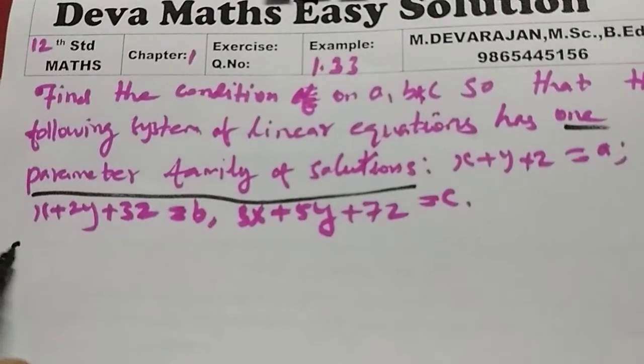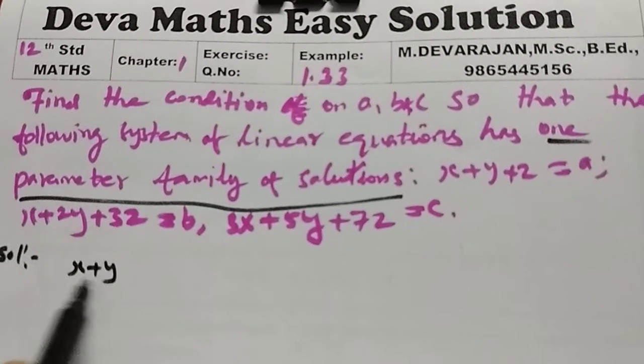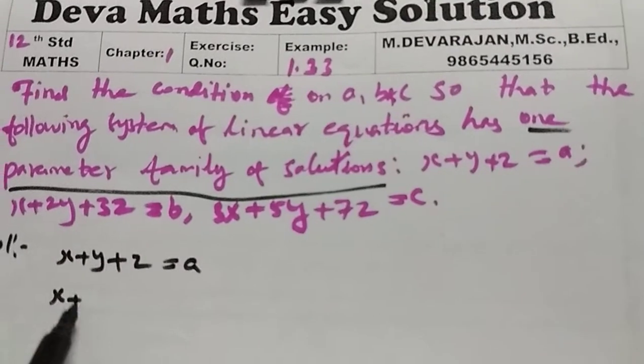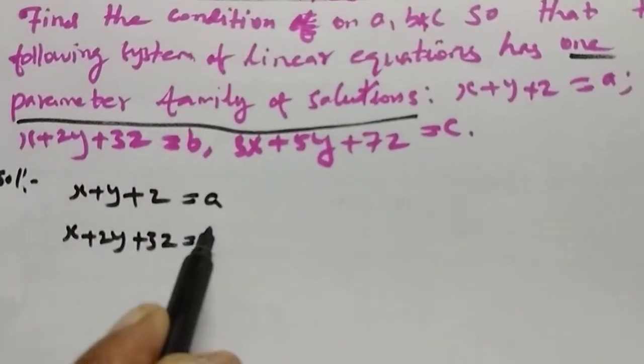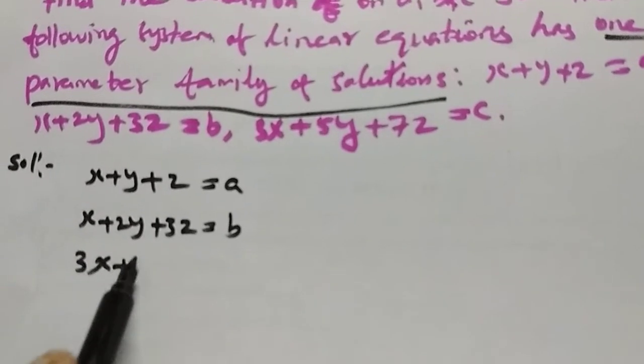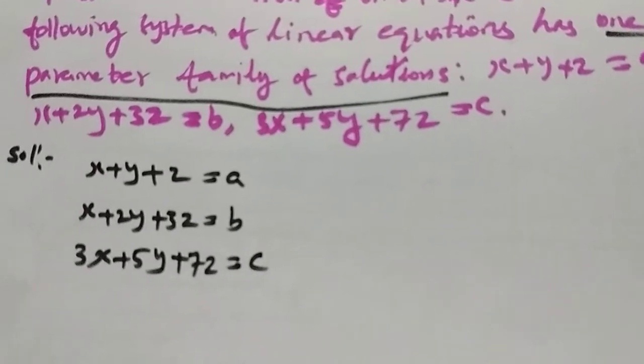The given equations are: first equation x plus y plus z equals a, second equation x plus 2y plus 3z equals b, third equation 3x plus 5y plus 7z equals c.